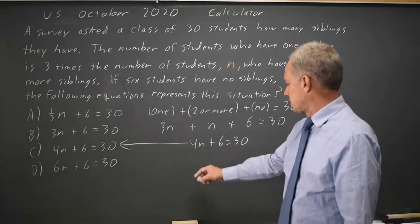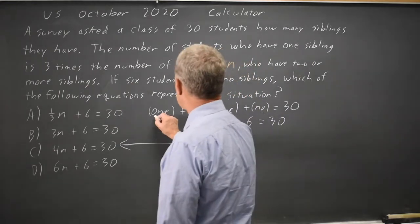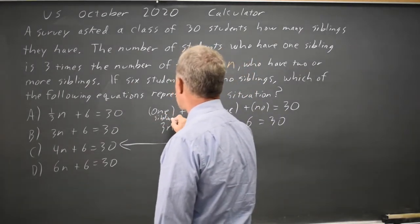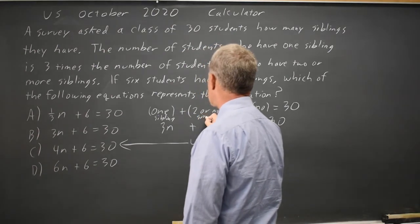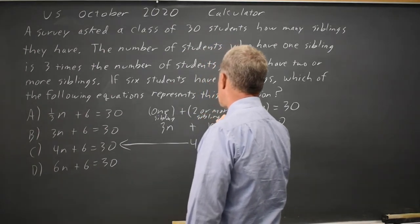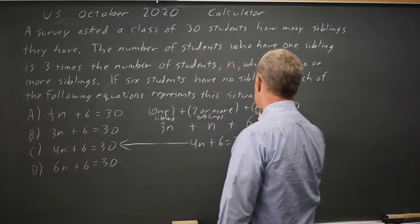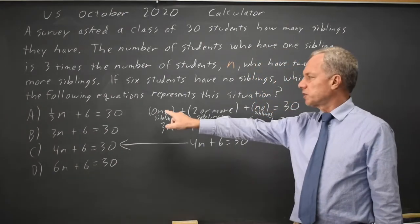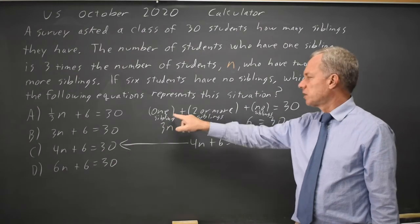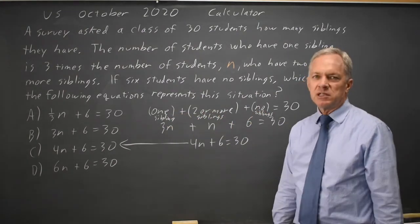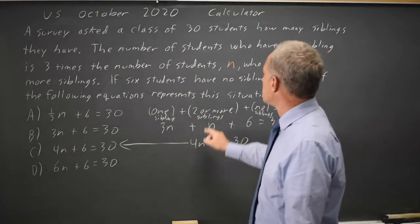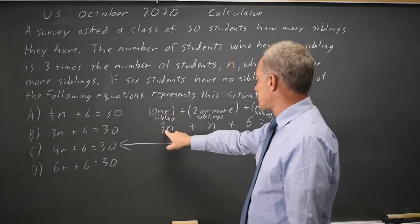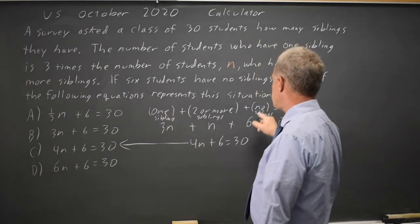I like to organize it — I should probably label this: one sibling, two or more siblings, and no siblings. But since this is really to organize my own thoughts, writing one, two or more, and no is sufficient for me to then say: two or more siblings was n, one sibling was three times that so 3n, and no siblings was six.